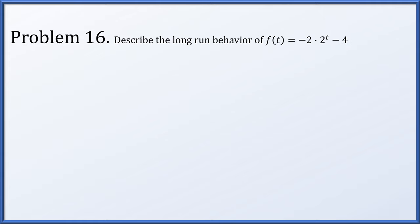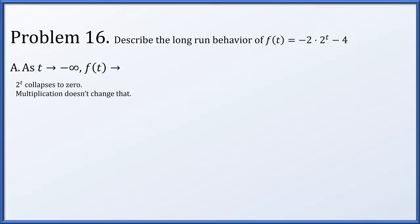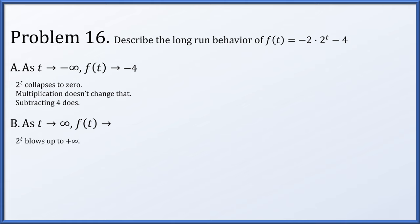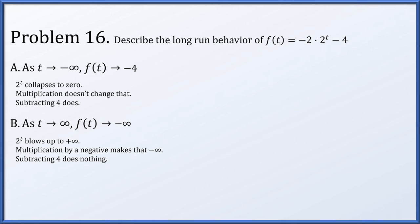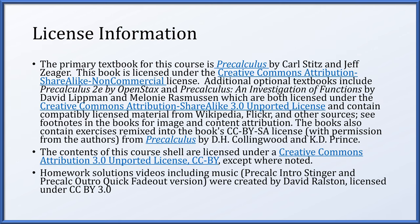For the last problem, describe the long-run behavior of f(t) = negative 2 times 2 to the t minus 4. As t goes to minus infinity, 2 to the t collapses to 0, multiplication by negative 2 keeps it at 0, but subtracting 4 gives f(t) approaching minus 4. As t goes to plus infinity, 2 to the t goes to plus infinity, multiplied by negative 2 gives minus infinity, and subtracting 4 doesn't change that, so f(t) goes to minus infinity.